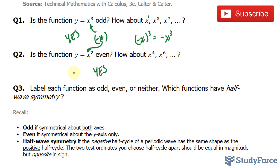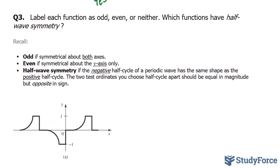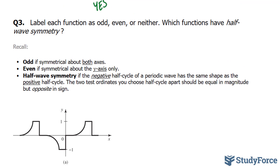Question 3 is more difficult. We're asked to label each waveform as odd, even, or neither, and then determine which functions have half-wave symmetry. For reference: odd functions have symmetry about both axes, even functions have symmetry about the y-axis, and we've already discussed what half-wave symmetry looks like.